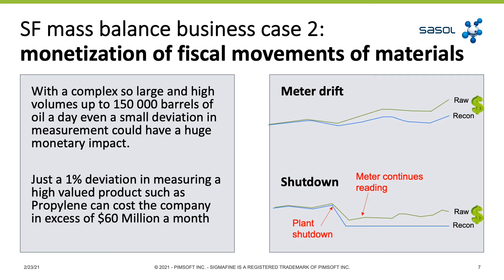This is from one of our key customers, Sasol, who uses Sigma Fine for daily production. This slide gives the business value of the uncertainty in their data set. For example, a 1% uncertainty in a high-value product such as propylene in a large refinery — Sasol in South Africa — translates to a potential cost of $60 million monthly. What they're saying is: if you can't name it, you can't claim it. If they don't balance the data and rely fully on raw data, this inaccuracy translates to millions of dollars per month per product.